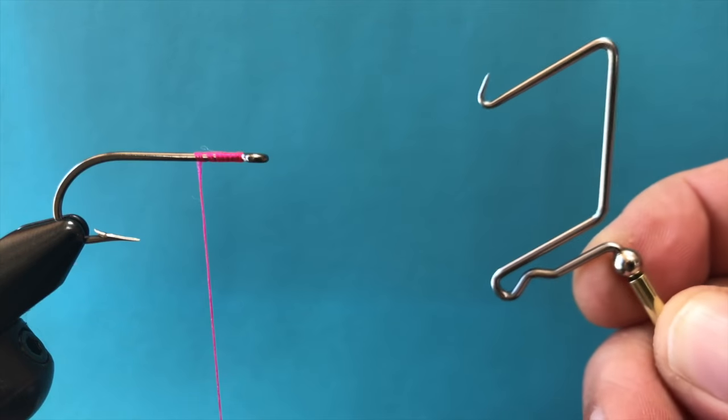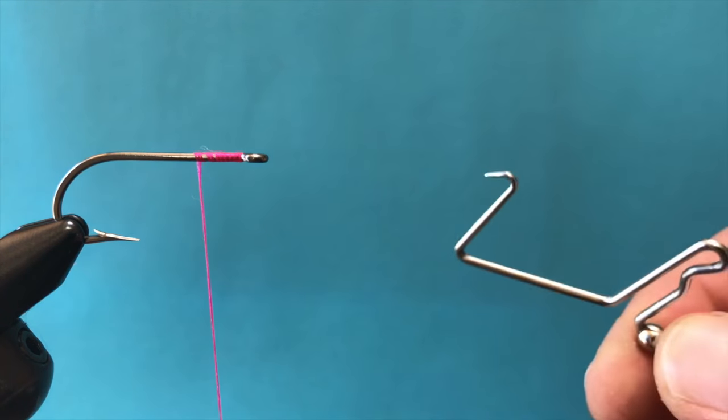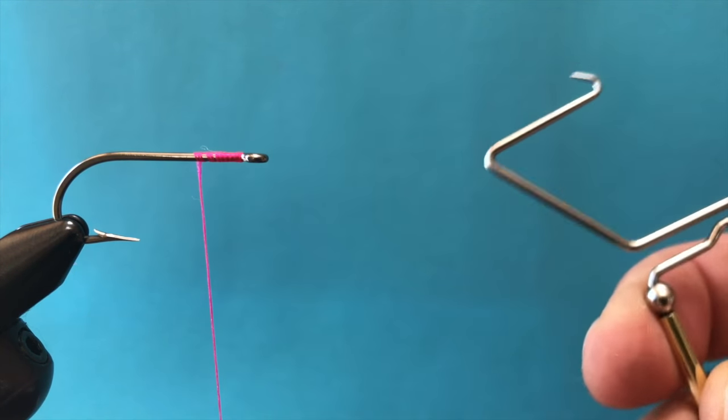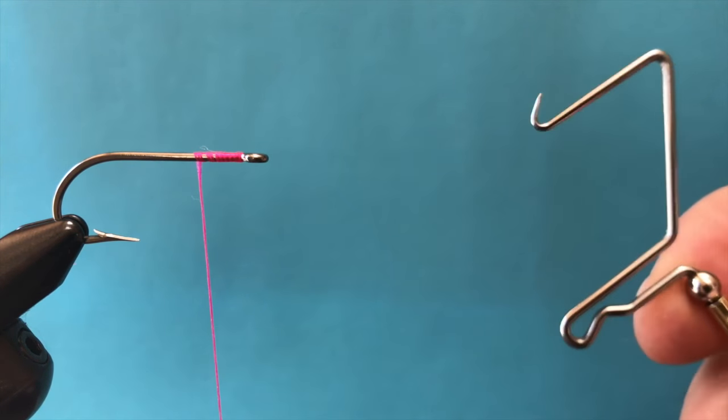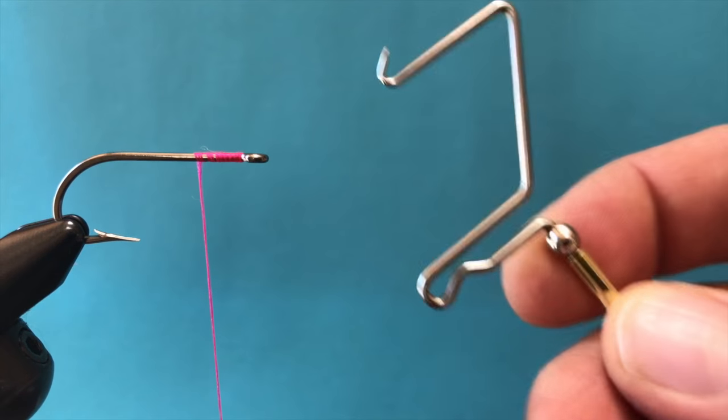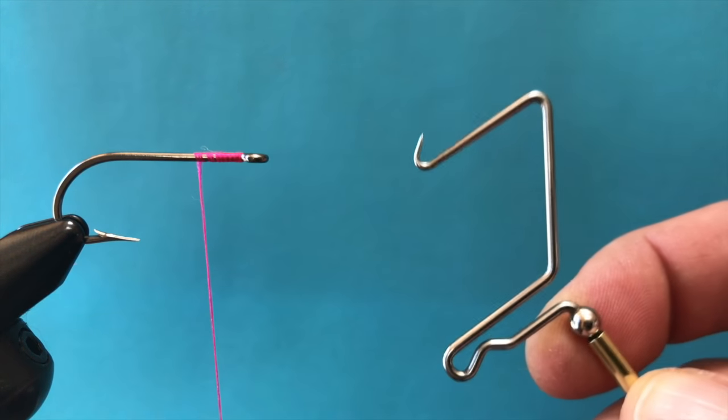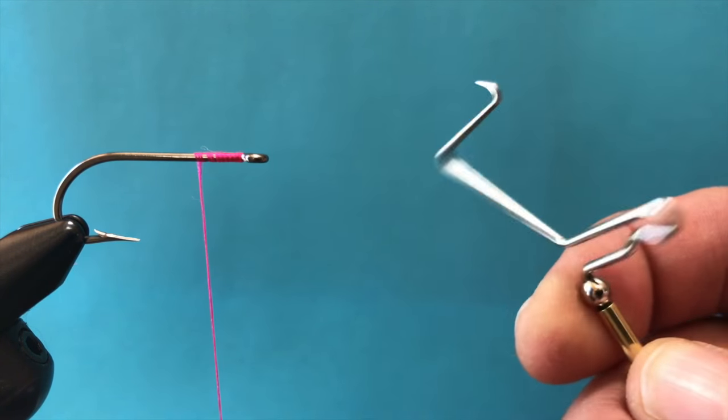However, when a lot of beginning fly tiers look at this, it's a little perplexing. It looks kind of complicated, like some kind of complicated surgical tool or maybe a medieval torture device. But once you learn a few tricks, it's actually pretty simple to use, and in my opinion, the best way to finish off a fly.